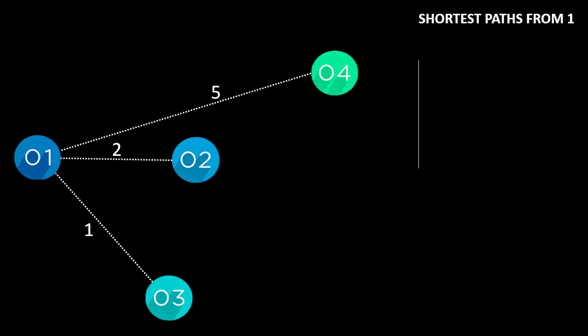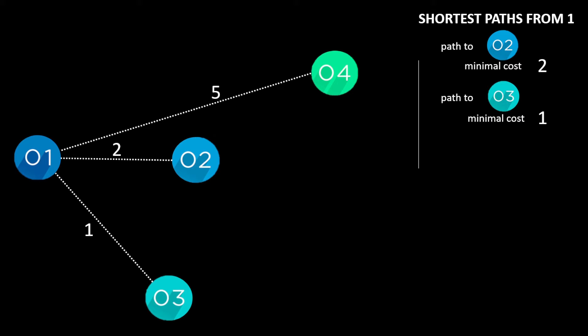What's the shortest path from node 1? Quite simply: the shortest path to node 2 has a cost of 2, the shortest path to node 3 has a cost of 1, and the shortest path to node 4 has a cost of 5. That's quite straightforward.